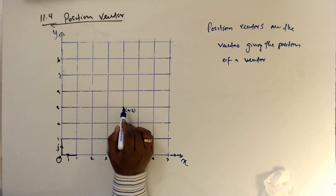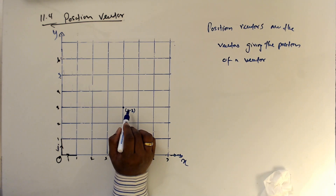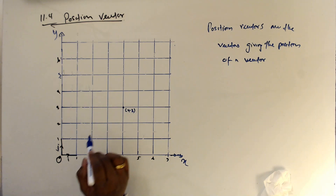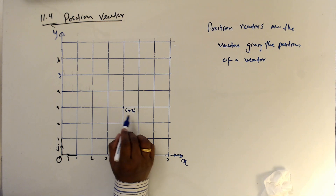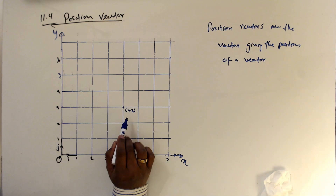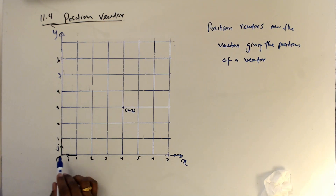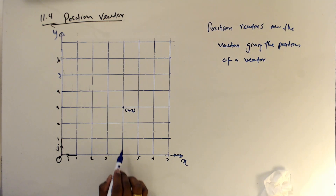So this (4, 3) — the coordinate is relative to which point? We said this point is (4, 3). So this 4, 3 is from which point? This (4, 3) is from this O point, this origin. So from the origin, 1, 2, 3, 4 and 3.